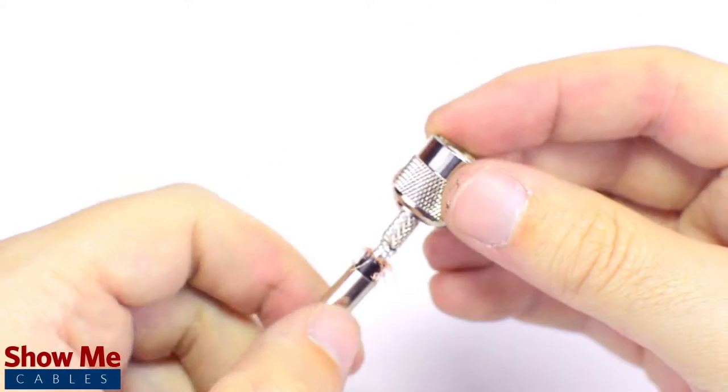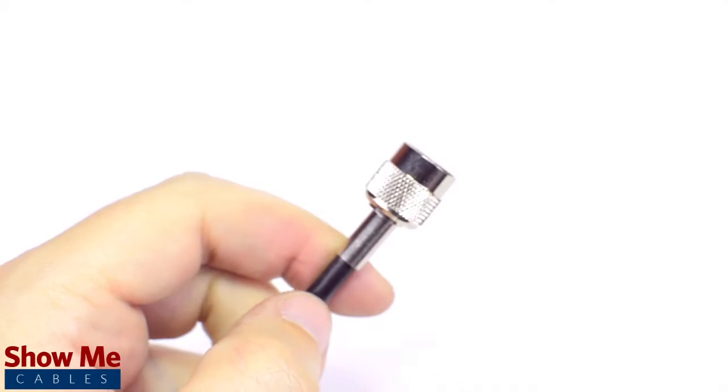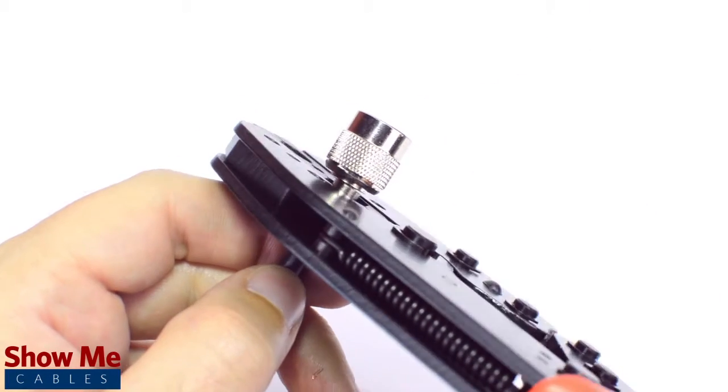Then slide the ferrule up to the base of the connector, folding the shield with it. Crimp the ferrule under the outer jacket to complete termination.